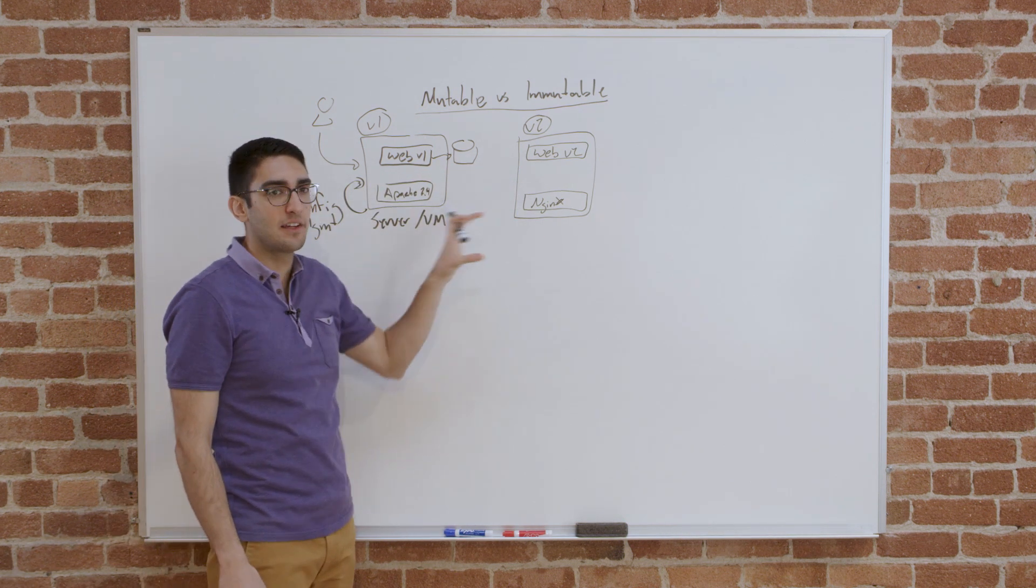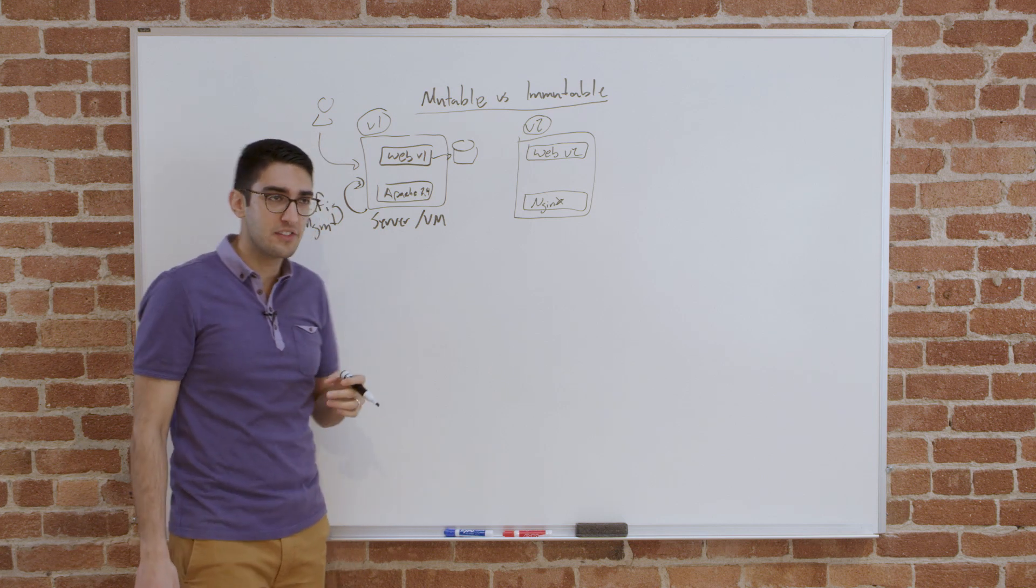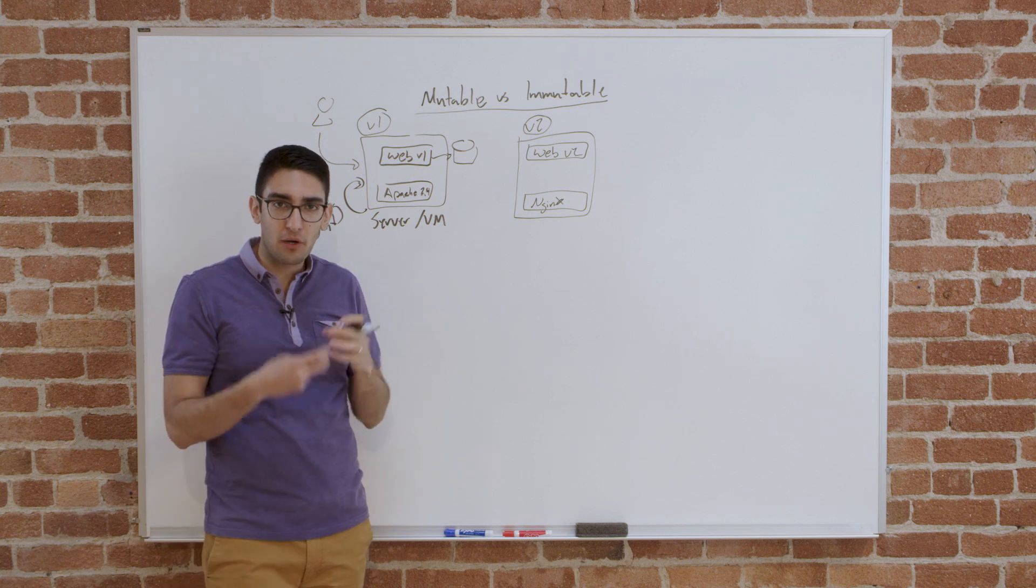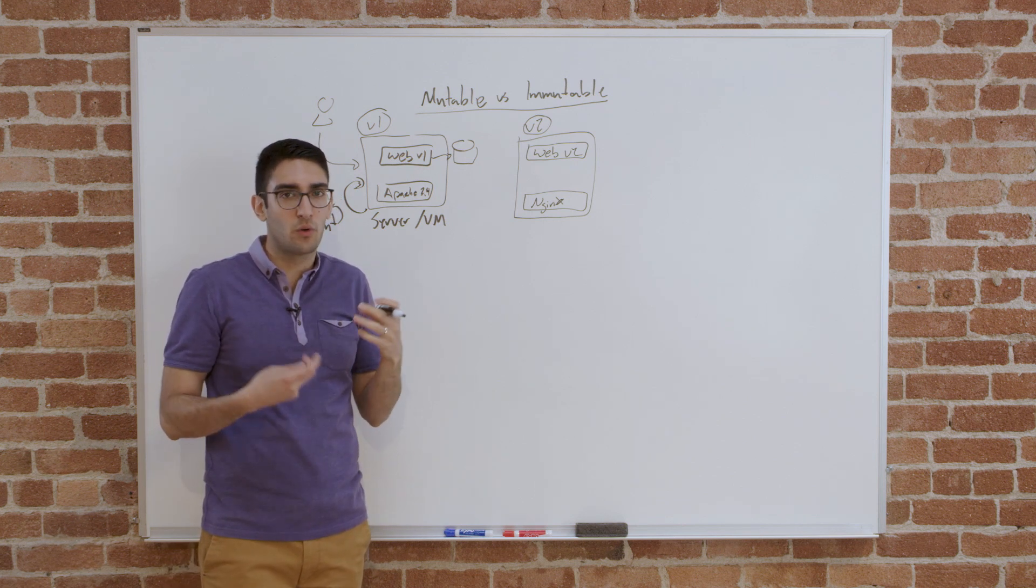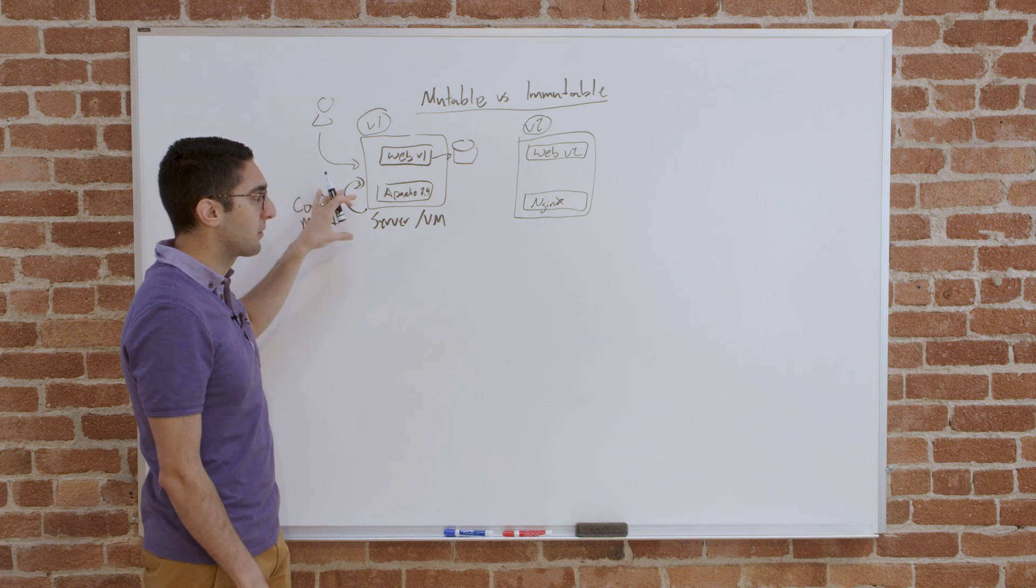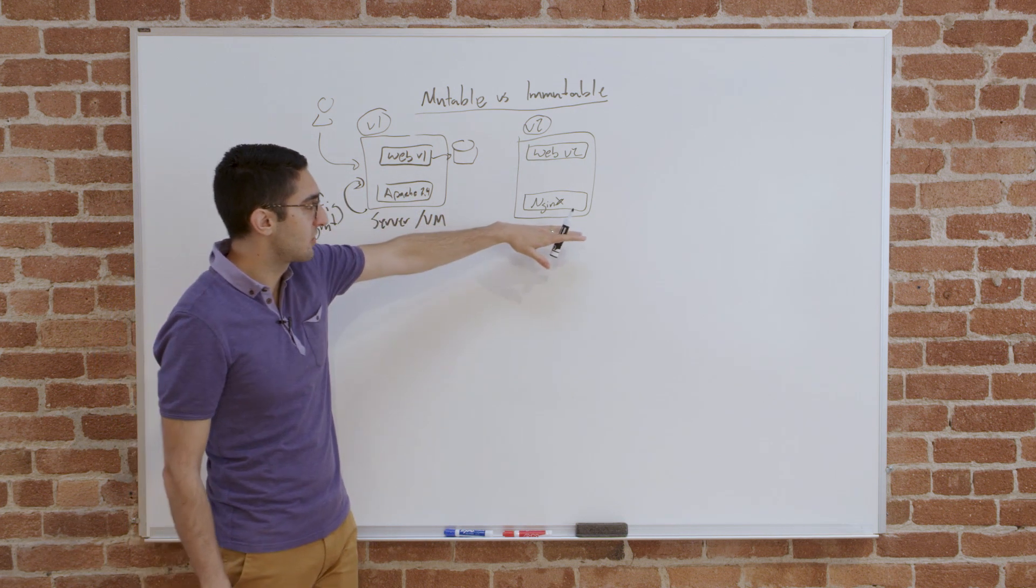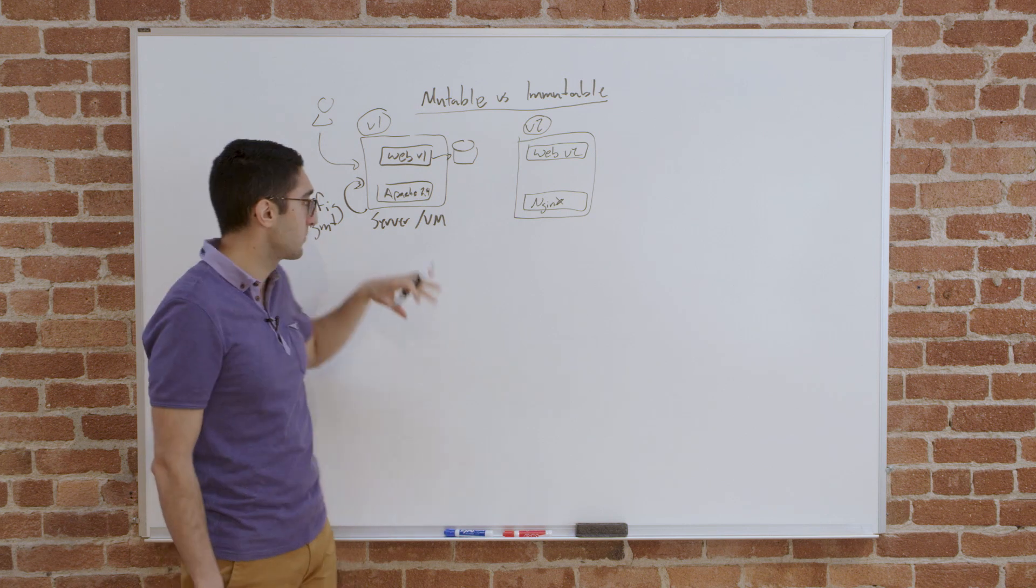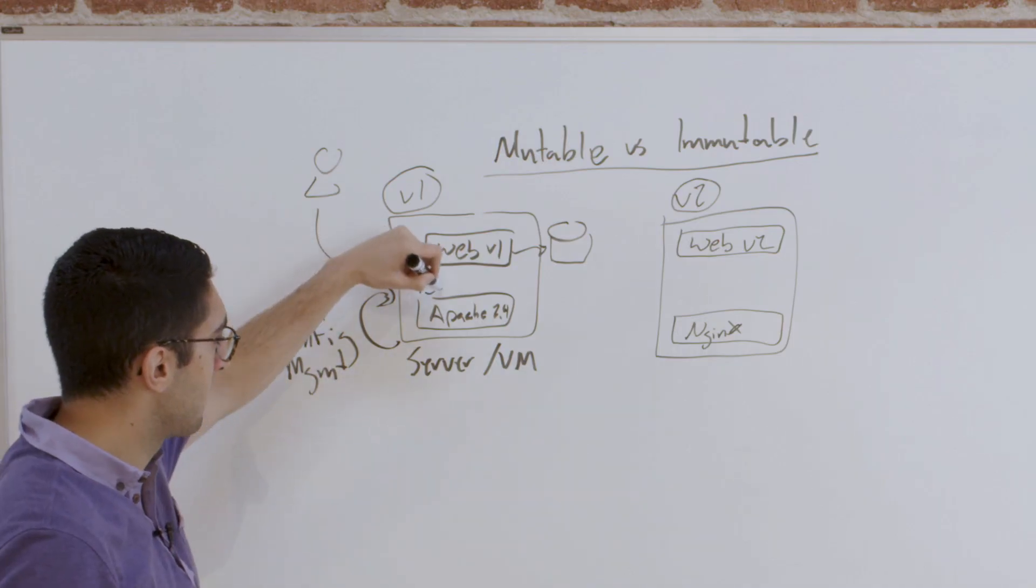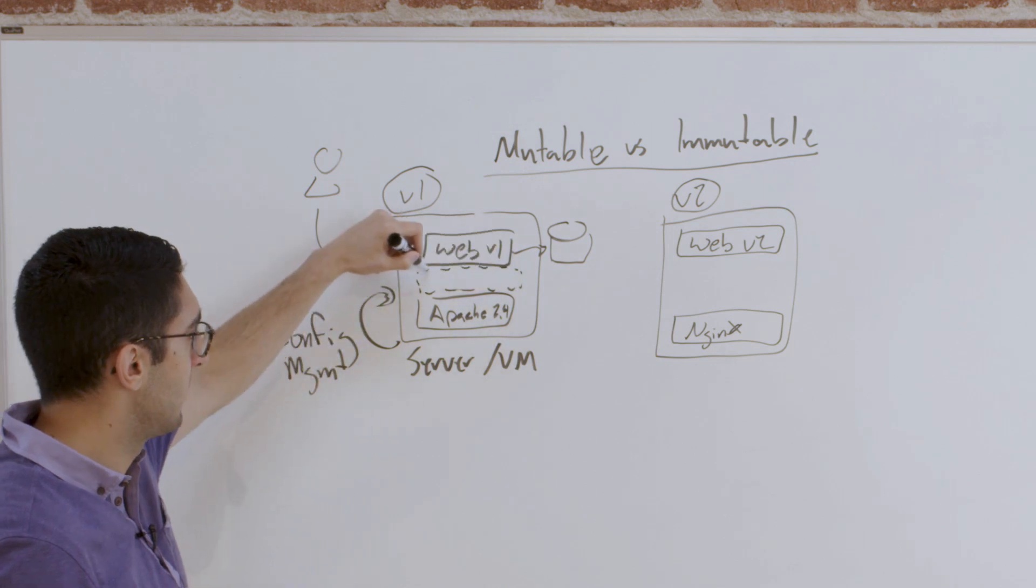So what's nice about that is we already have this existing server. The server exists. Maybe we have data that we've written locally, and that our web server is consuming. And so when we update in place, we don't have to worry about moving the data around to other machines, creating a new machine. All of the infrastructure already exists. All we're going to do is perform this upgrade. Now, the challenge of mutable and the trade-off with it is what happens if this doesn't upgrade perfectly?